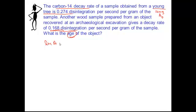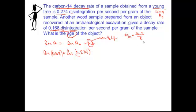So let's start with natural log of A equals natural log of A₀ minus KT. So our initial is 0.274. Our final is 0.168. K, we need to use half-life. So T₁/₂ equals the natural log of 2 over K. And this is wood, I'm sorry, it's carbon-14.